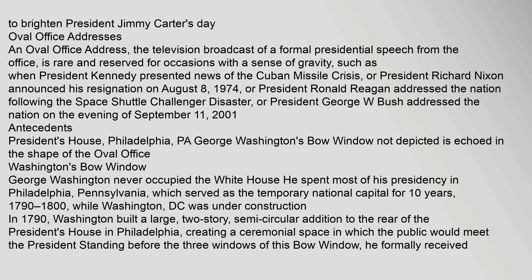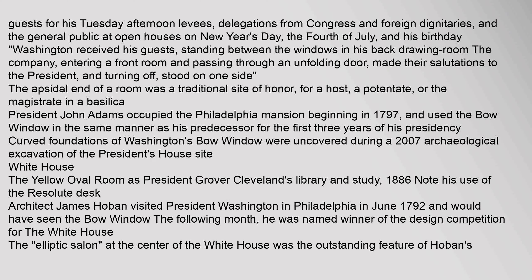In 1790, Washington built a large, two-story, semicircular addition to the rear of the President's House in Philadelphia, creating a ceremonial space in which the public would meet the President. Standing before the three windows of this bow window, he formally received guests for his Tuesday afternoon levies, delegations from Congress and foreign dignitaries, and the general public at open houses on New Year's Day, the 4th of July, and his birthday.